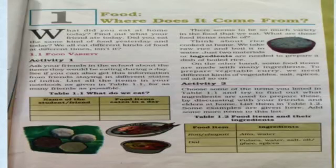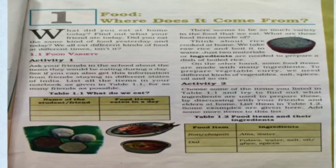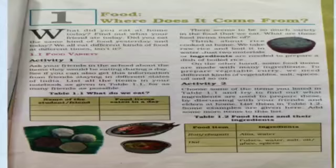Activity two is about food items and their ingredients. For making roti or chapati, you use atta, water, and salt. Then for dal, you need pulses, water, salt, oil, ghee, and some spices. This is how you can make dal.